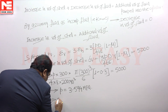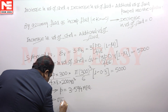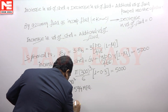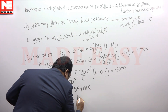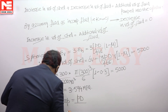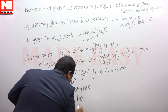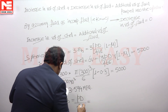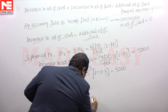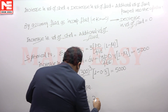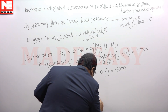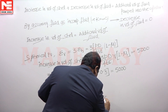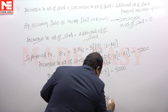The hoop stress is then given by Pd/4t. Substituting the given data, the hoop stress works out to 33.696 MPa.